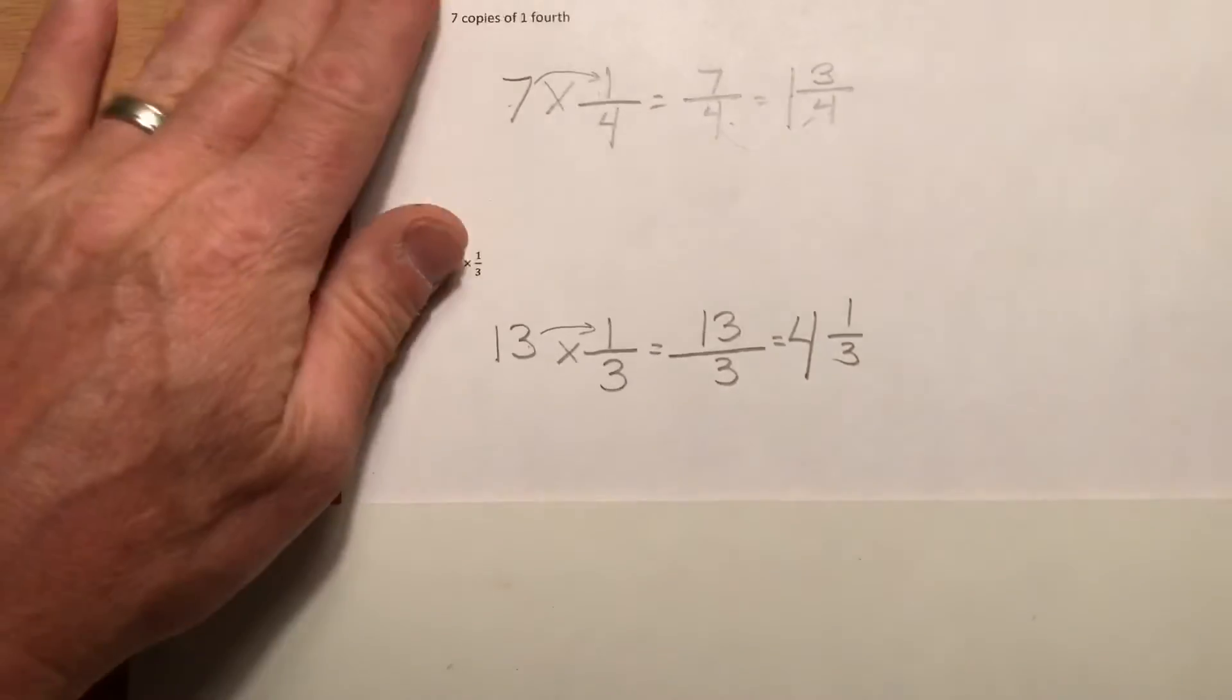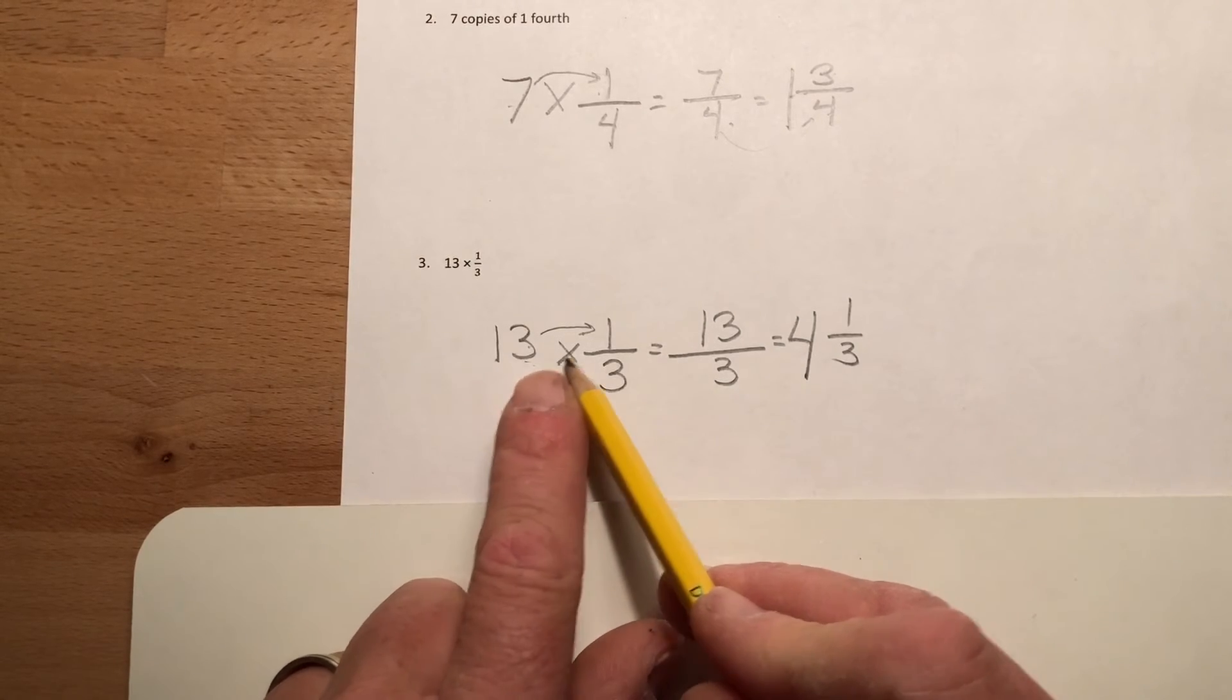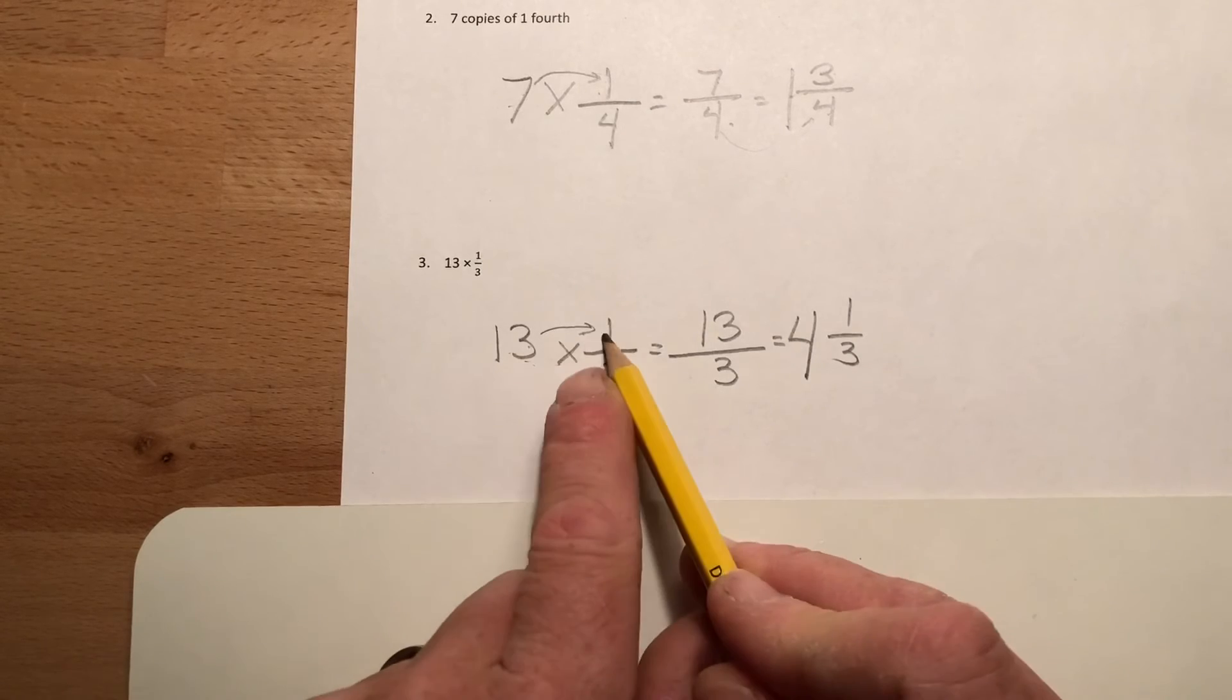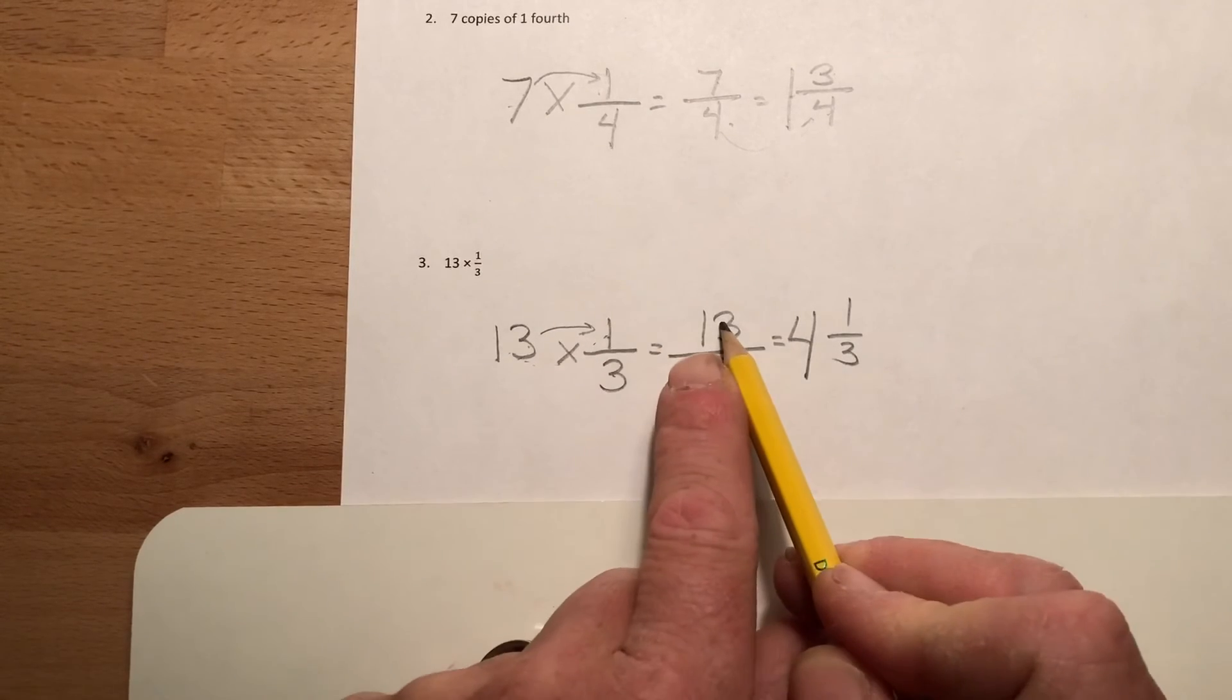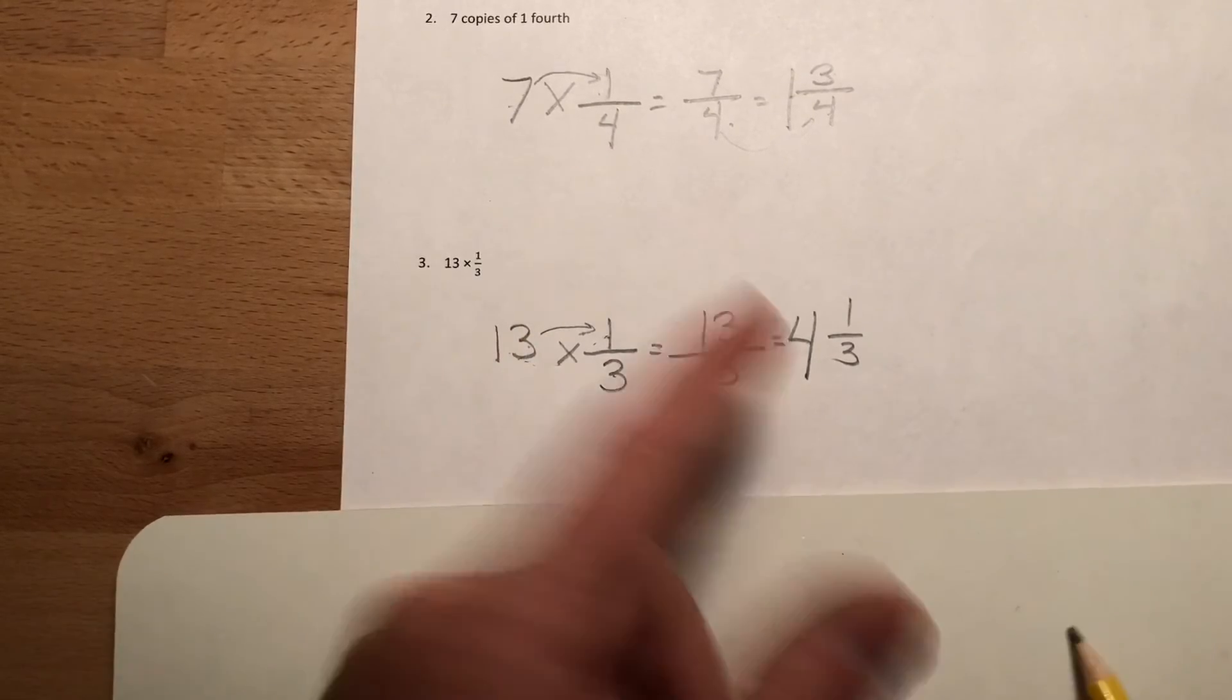And then finally down here I rewrote it so we could see it a little bit better. So thirteen times one-third, so I just multiply that thirteen times the numerator here. Thirteen times one gives me thirteen-thirds. If I counted one-third thirteen times I get thirteen-thirds, right?